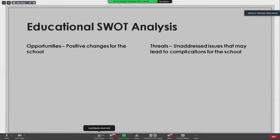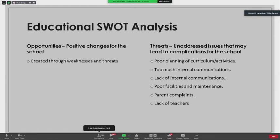When we talk about opportunities, we're talking about the positive changes that can be made in the school. And when we're talking about threats, we're talking about unaddressed issues that may lead to complications for your educational program. So what we know is that opportunities are created through weaknesses and threats. And the threats to your school or your district may be poor planning of curriculum activities, you don't have enough internal or external communications, you have poor facilities and maintenance, and you have a lack of qualified teachers. So when you conduct a SWOT analysis, you look at those things. So I would encourage you that when you get back to your schools, you do a SWOT for your school and for your classroom so that you can identify those critical issues that can push you forward or that can hold you back. I think a SWOT is critical and it's a way for the leadership to see the big picture.